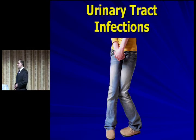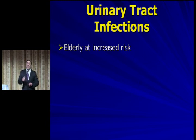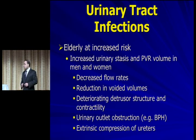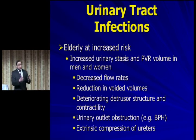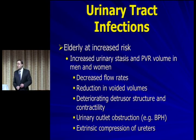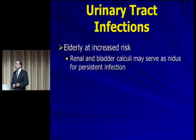Let's talk about UTIs. Elderly are at increased risk of urinary infections. Why? Elderly patients often have urinary stasis and increased post-void residual volume. When a normal young patient voids, usually less than 50cc of urine remains in the bladder. With elderly patients, there can be 100, 150, 200cc of stagnant urine — a good medium for bacterial growth. They don't void as much, have poor detrusor function, outlet obstructions, and BPH is a big risk factor.